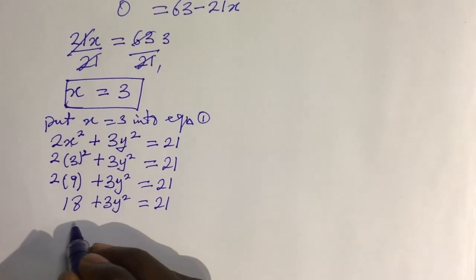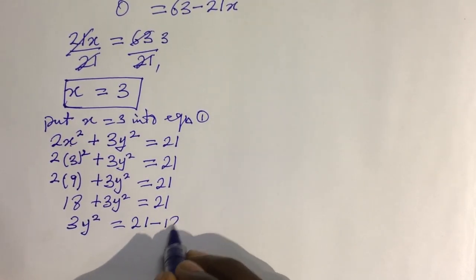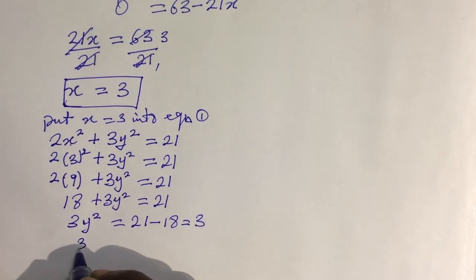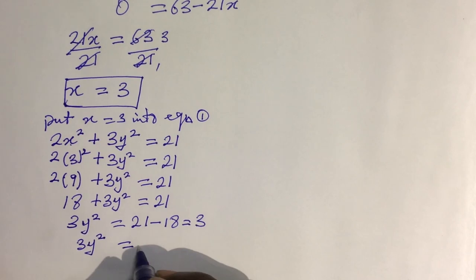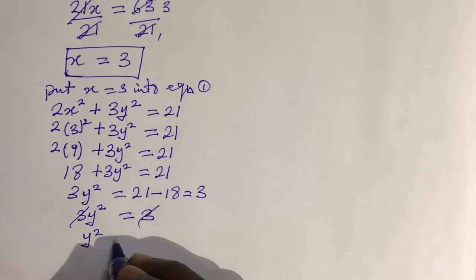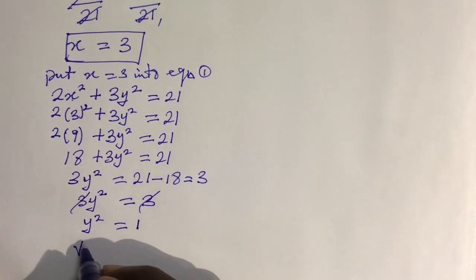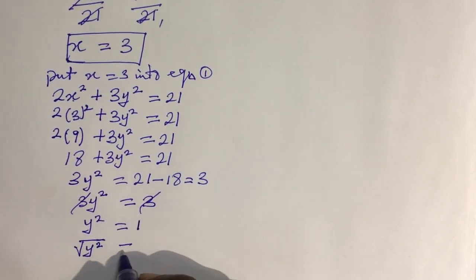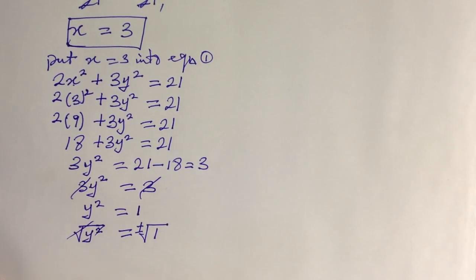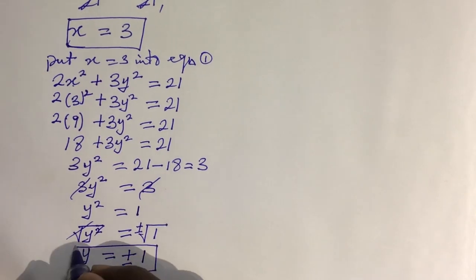Collecting like terms: 3y² = 21 − 18 = 3. Dividing both sides by 3 gives y² = 1. Taking the square root of both sides and introducing ±, we get y = ±1. We now have both values for y.